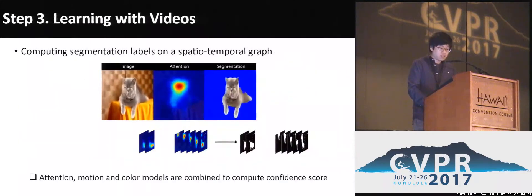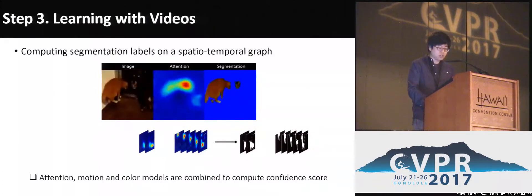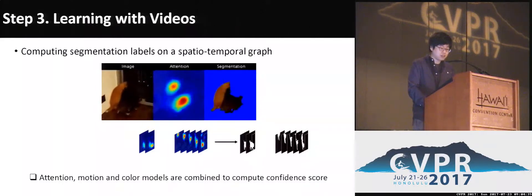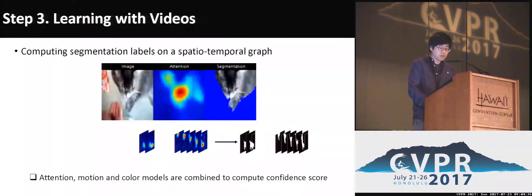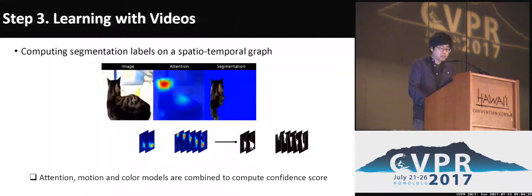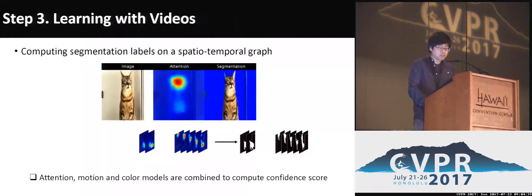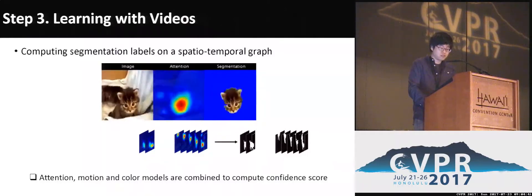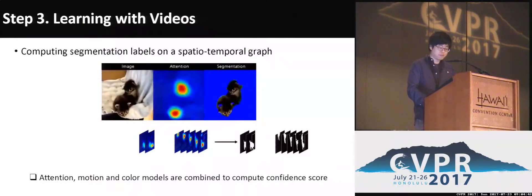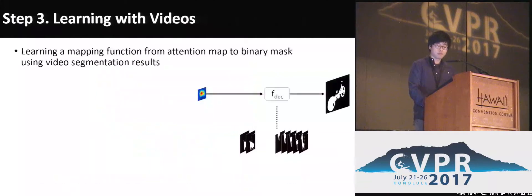Given attention maps together with motion information, the final segmentation labels in videos are obtained by solving an optimization problem on a spatial-temporal graph constructed from the video. The obtained segmentation masks are then used to train a decoder, which is a function that maps coarse attention to a dense binary segmentation mask.